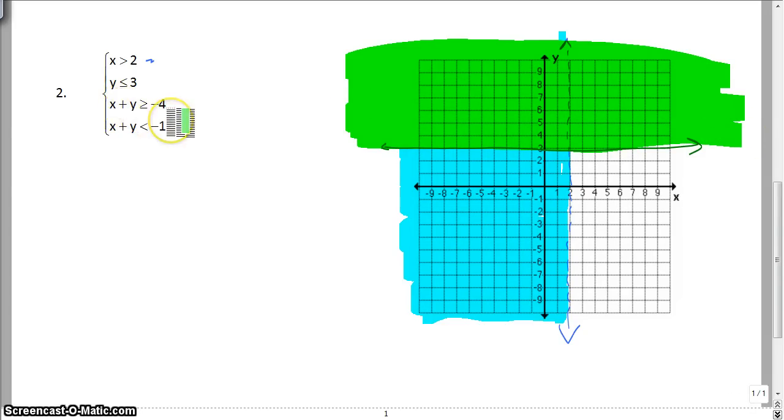And then, the next one we have is x plus y is greater than or equal to negative 4. So, that's going to be x is negative 4, y is negative 4, greater than or equal to. So, that means we are going to draw a solid line. And that means we are going to have to shade for this one. I'm just doing a test point in my head. I'm going to test 0, 0. And I'm going to find out that that would technically be true. And that means I am going to shade below.